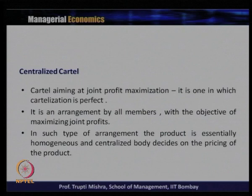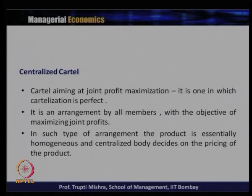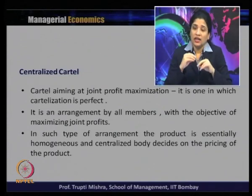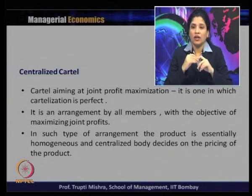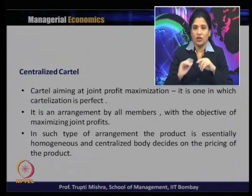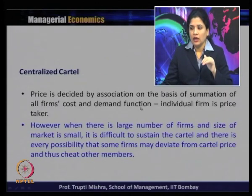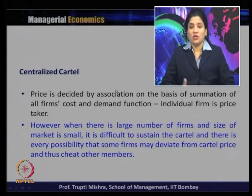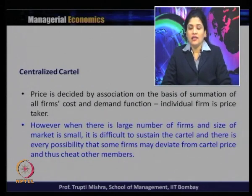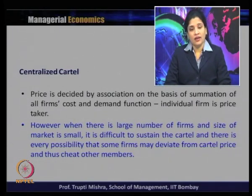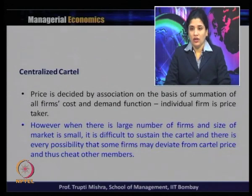A cartel aiming at joint profit maximization is one where cartelization is perfect. In such an arrangement, the product is essentially homogeneous and a centralized body decides the pricing of the product. Price is decided by the central agency based on the summation of all firms' cost and demand functions. Individual firms are not price makers — they are price takers, accepting the price decided by the central agency based on firms' cost and demand functions.